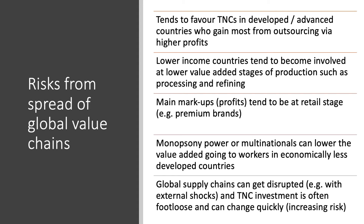Low-income countries tend to be stuck at basic processing and refining rather than later stages of production. The biggest profits and markups tend to be at the retail stage where a brand name is added. The significant buying power of multinationals — monopsony power — can lower the value added going to supply businesses in the chain, bringing down real incomes and living standards in less developed countries. Global supply chains can also get disrupted by economic, political, or climate shocks, and investment from transnational corporations is often footloose and can change quickly.